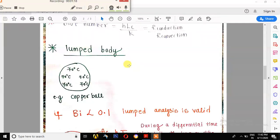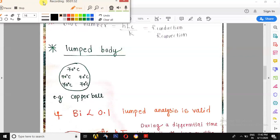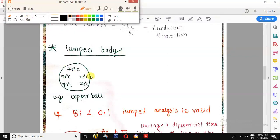Lumped body is a body whose interior temperature remains essentially uniform at all times during the heat transfer process. Here, the copper ball is a lumped body as it is maintained with uniform temperature.